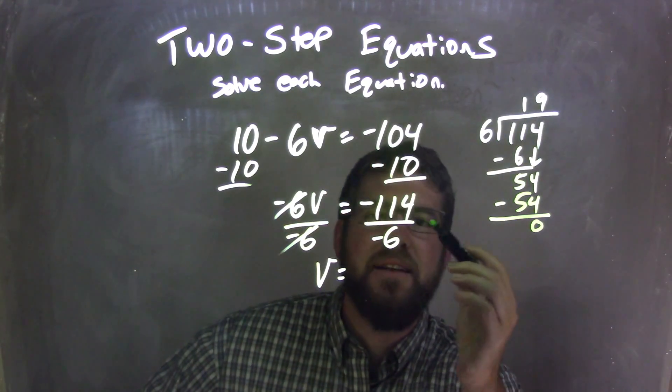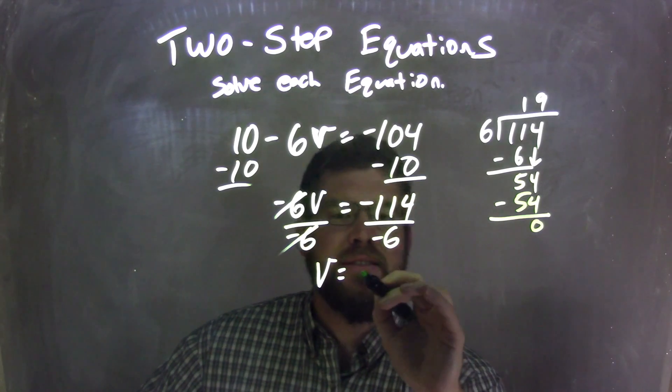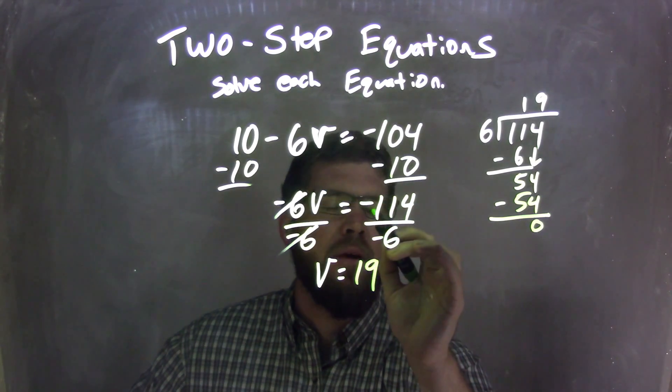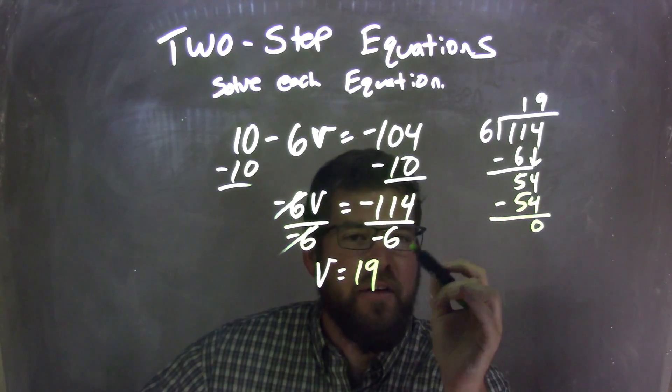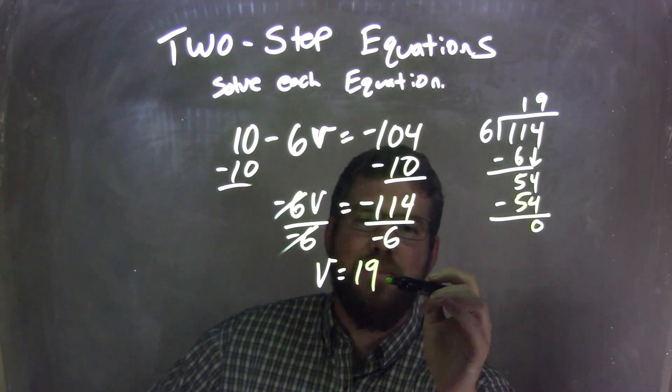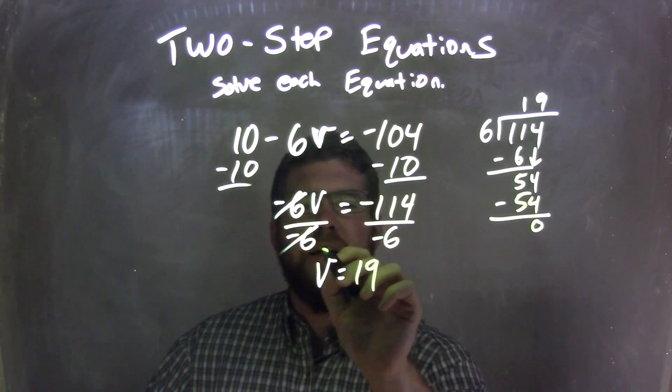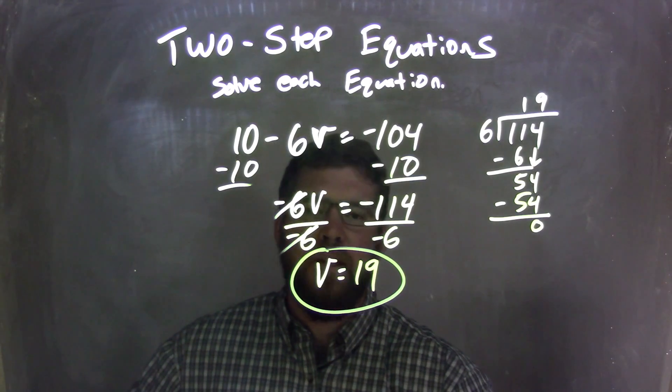19 is what 114 divided by 6 is. And again, remember, a negative divided by negative is a positive. So negative 114 divided by negative 6 is a positive 19. And so our final answer here is V equals 19.